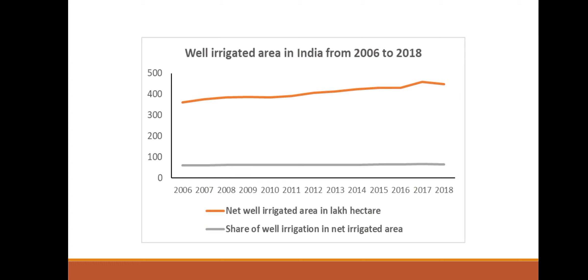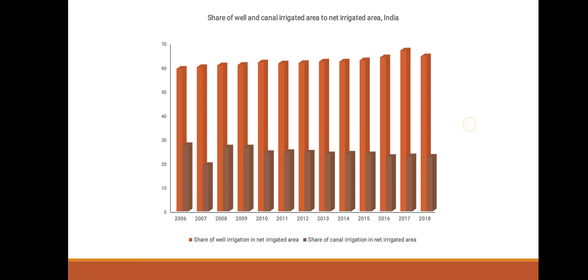Next, this line graph shows the well-irrigated area from 2006 to 2018. There has been a rapid constant maintenance during these years. The share of well irrigation in irrigated area remains constant throughout these years.